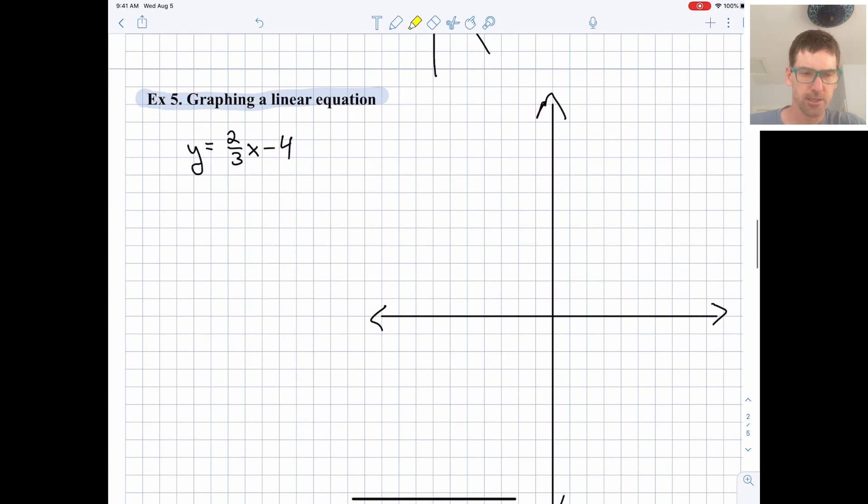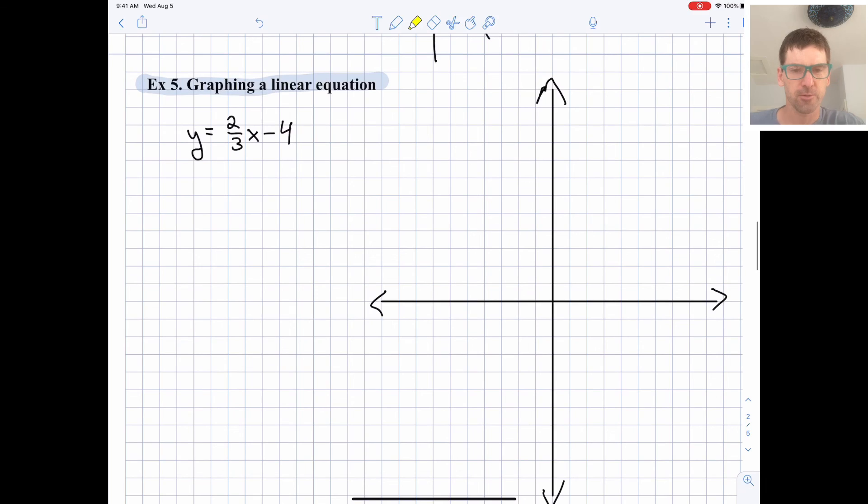And lastly, for this video, we'll do graphing. This is a pretty easy thing to do as long as you have it in slope intercept form already. So we have a slope of 2 thirds, we have a y intercept of negative 4. So let's go to our y intercept first and plot negative 4. Let's just have each square be 1. So we're going to go down to negative 4.